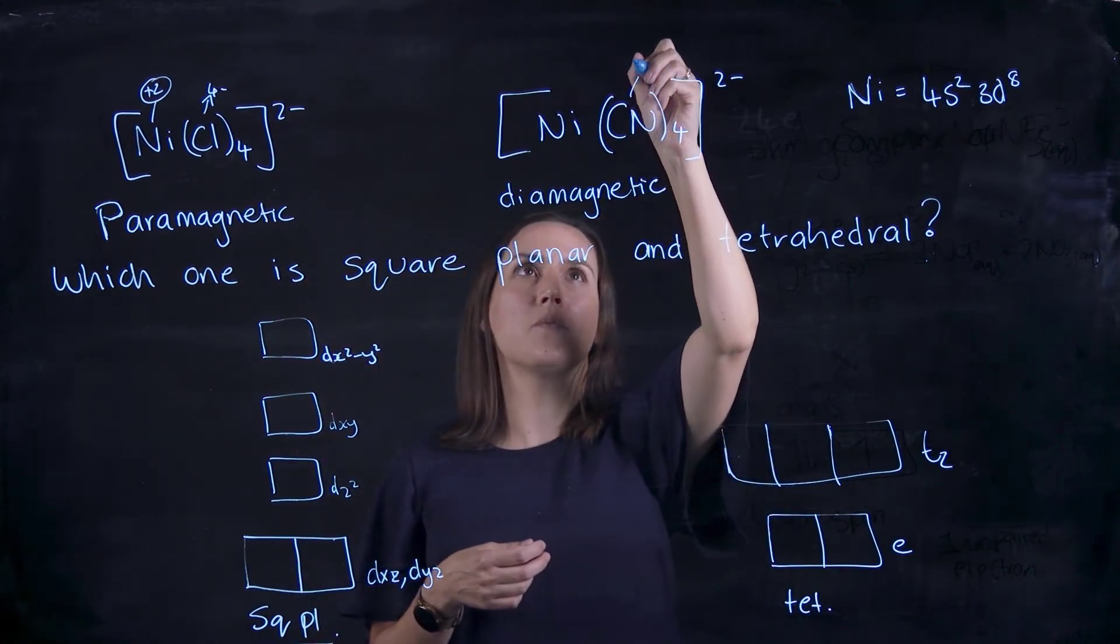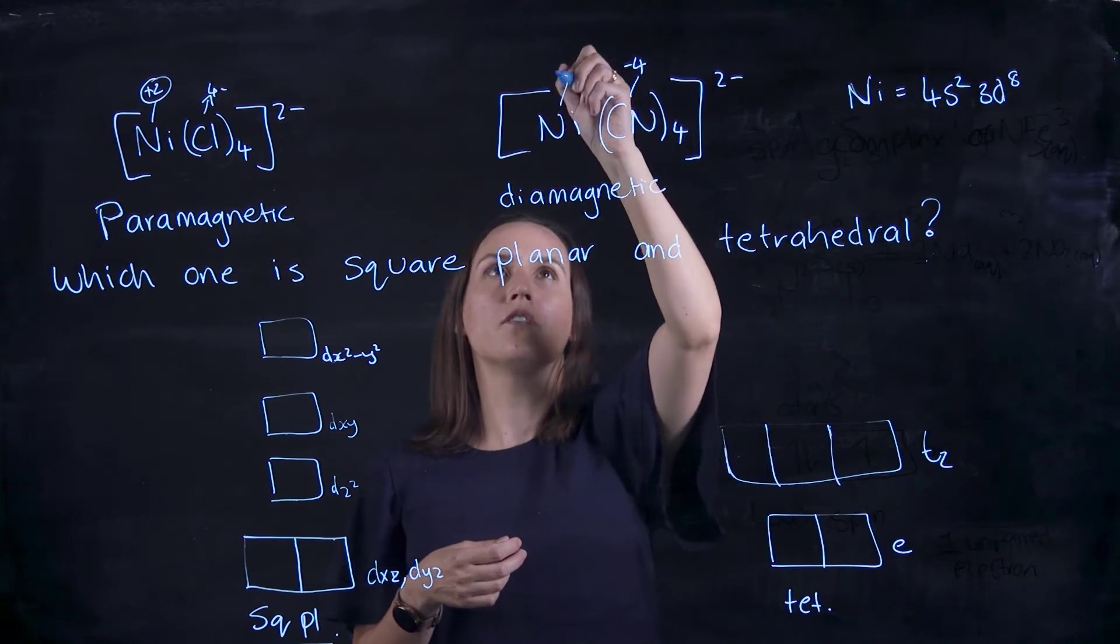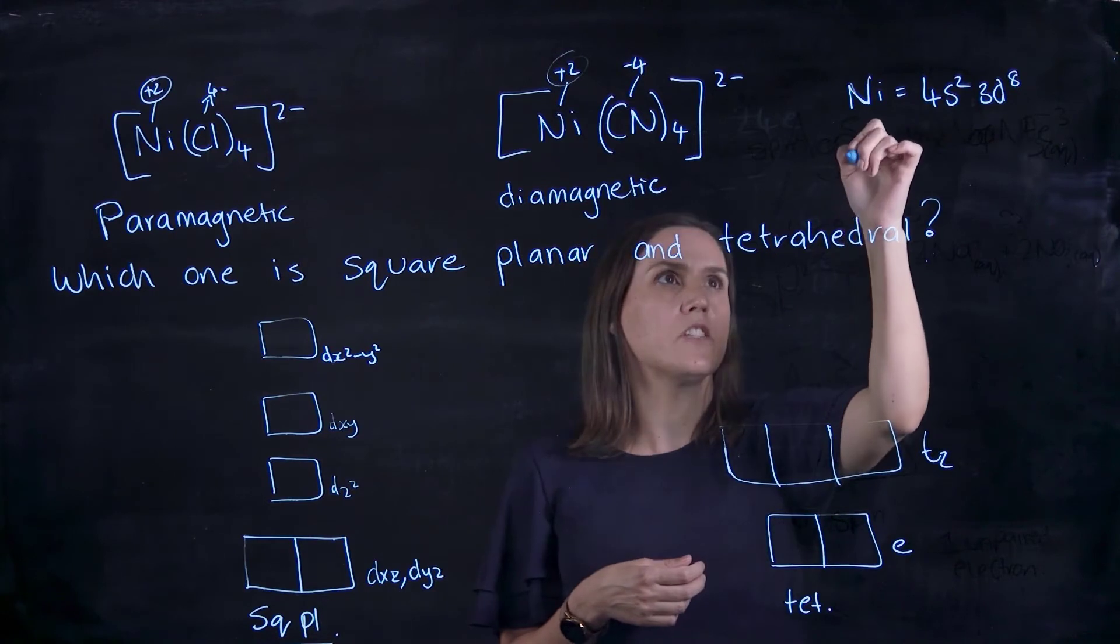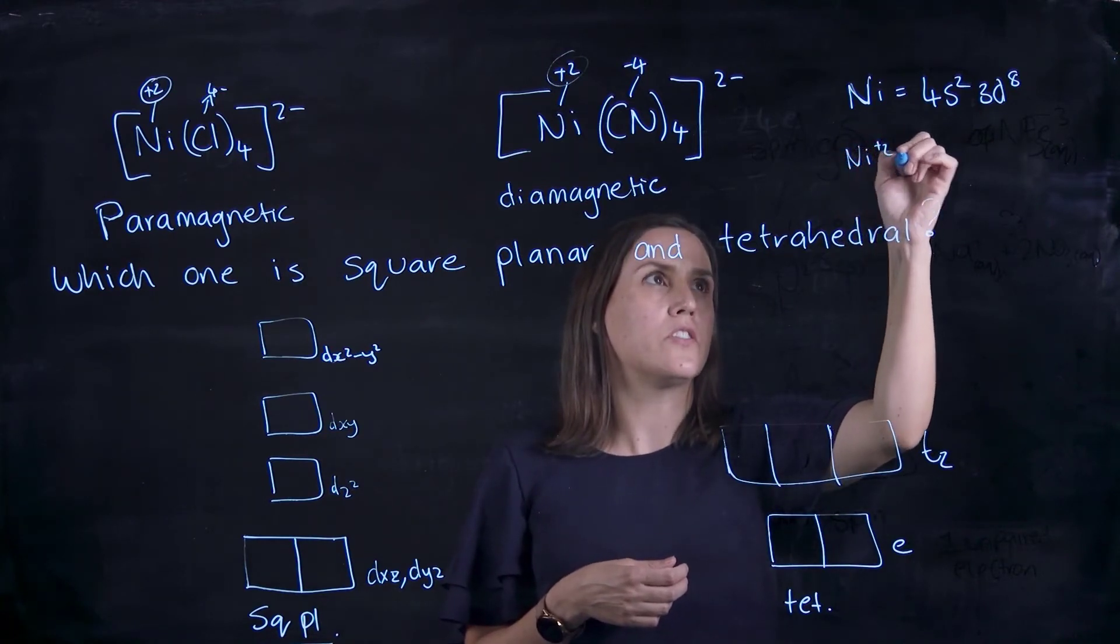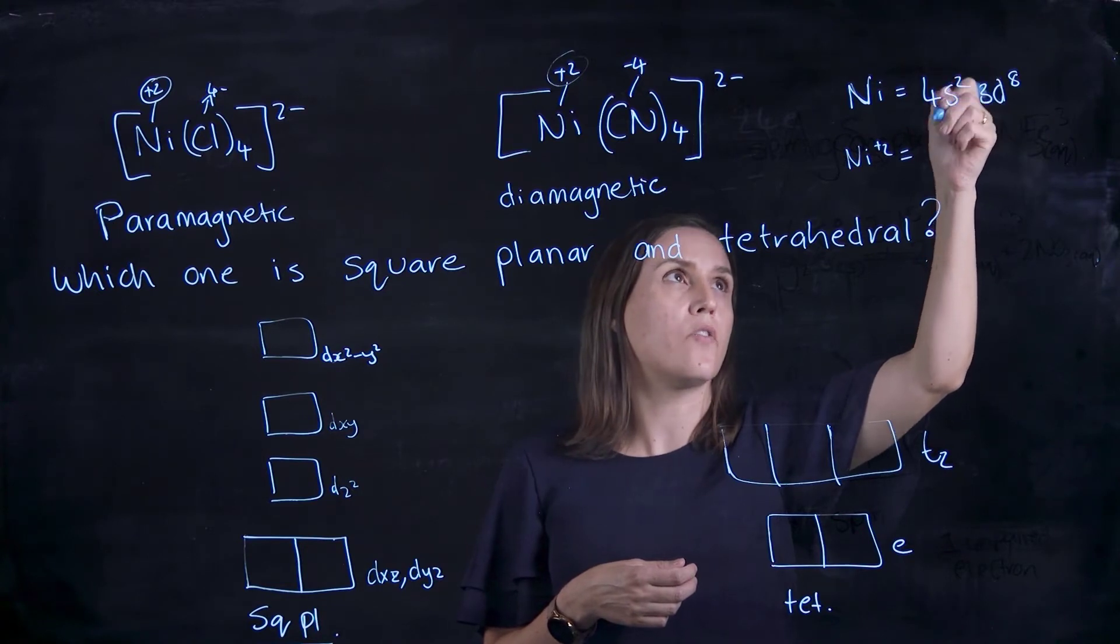CN is a minus as well, so we've got 4 minus, we've got minus 2, so this one must be +2 as well. They're both +2 nickels. Nickel +2 would give us—we would take away those 4s electrons and be left with 3d⁸, so we're assigning 8 d electrons.